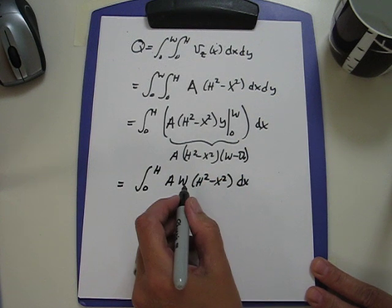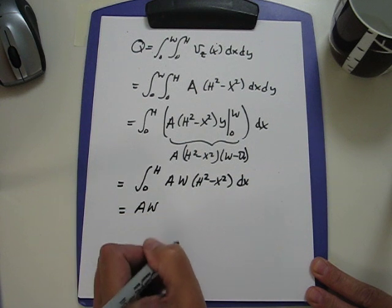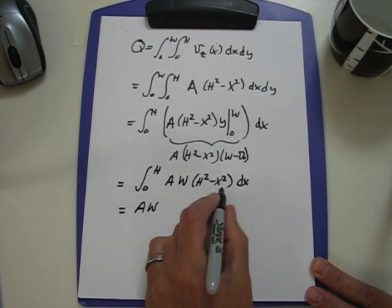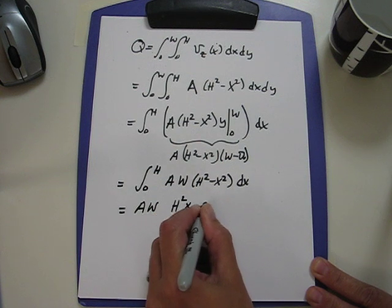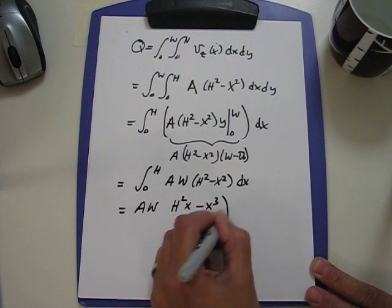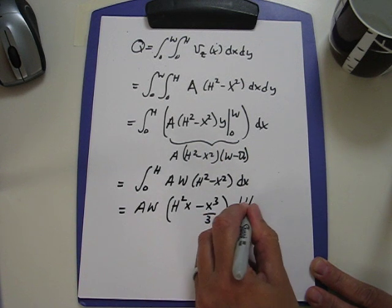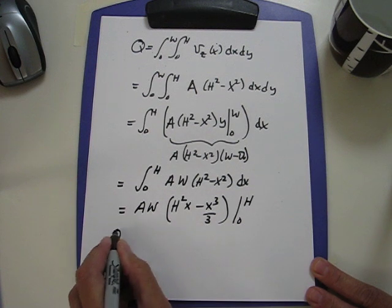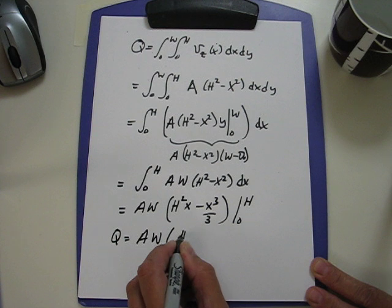Now we have to carry out the integral from 0 to h of A w h squared minus x squared dx. This is a simple integral as well. We'll move the A and the w on the outside. The integral of this with respect to x is h squared x minus x to the third over 3, evaluated from 0 to h.